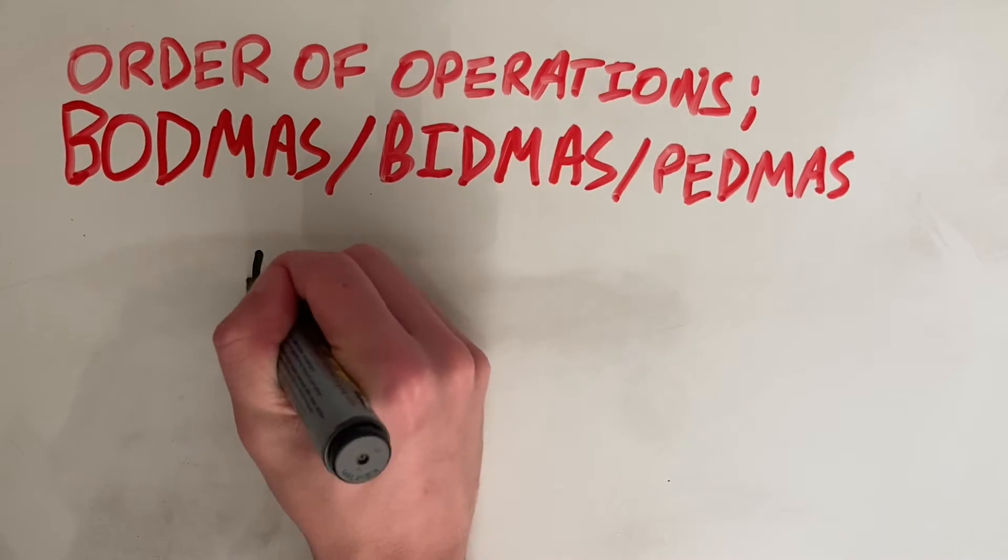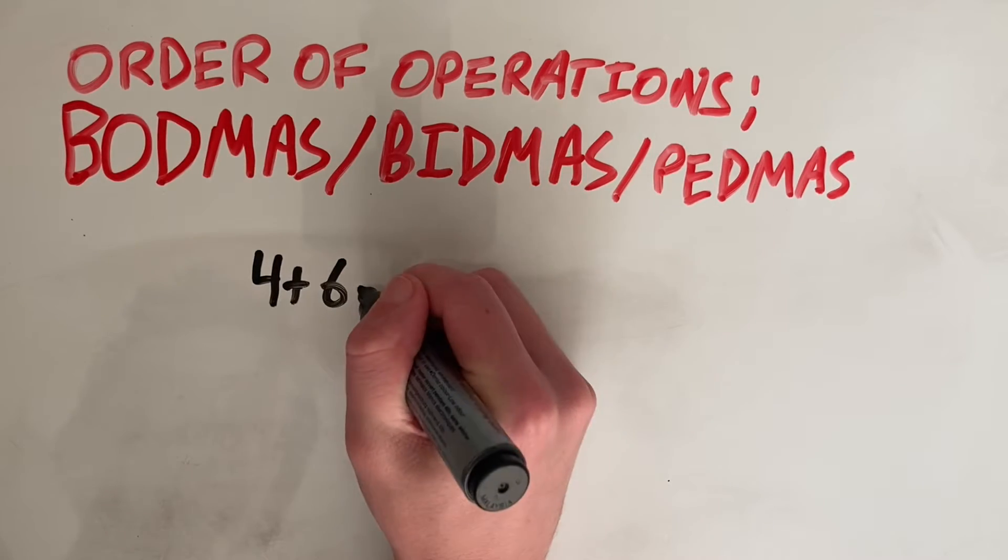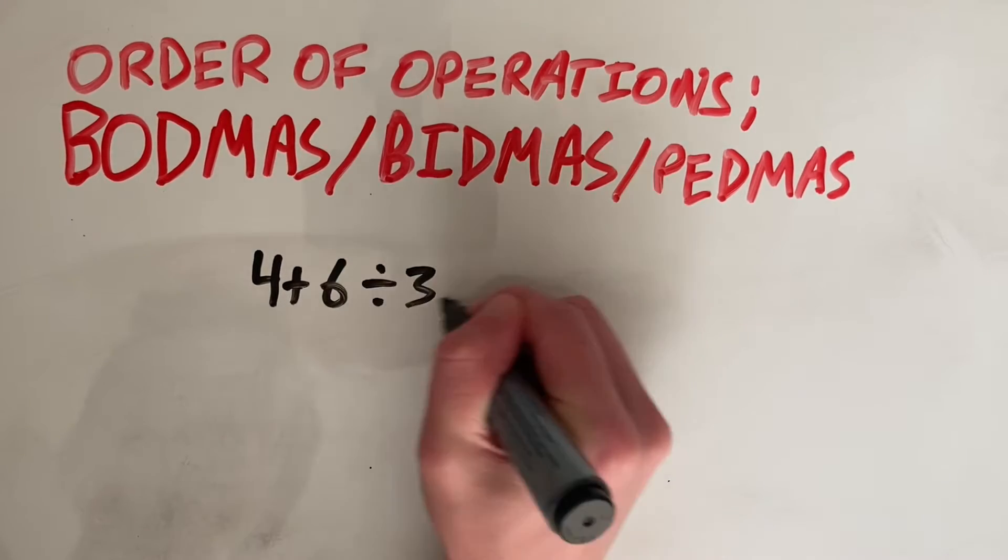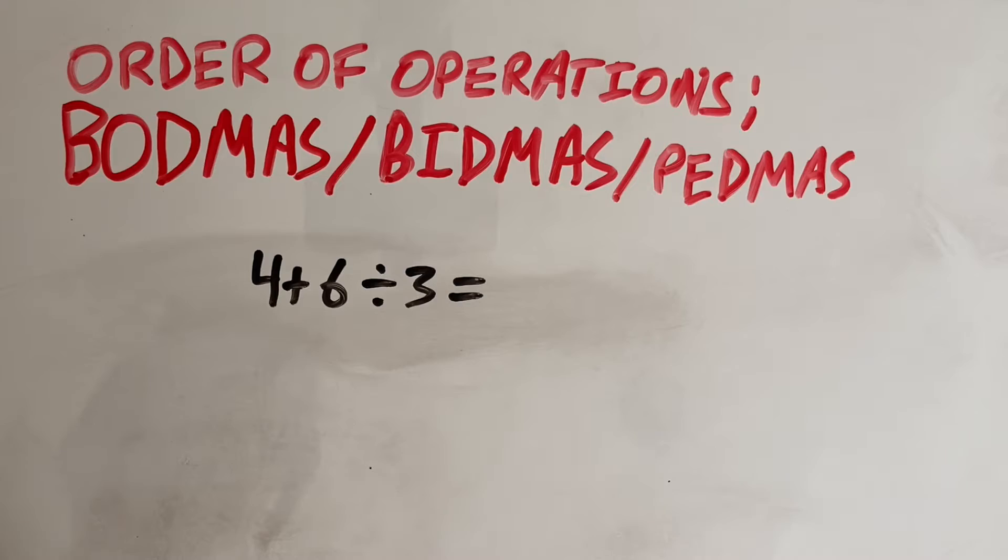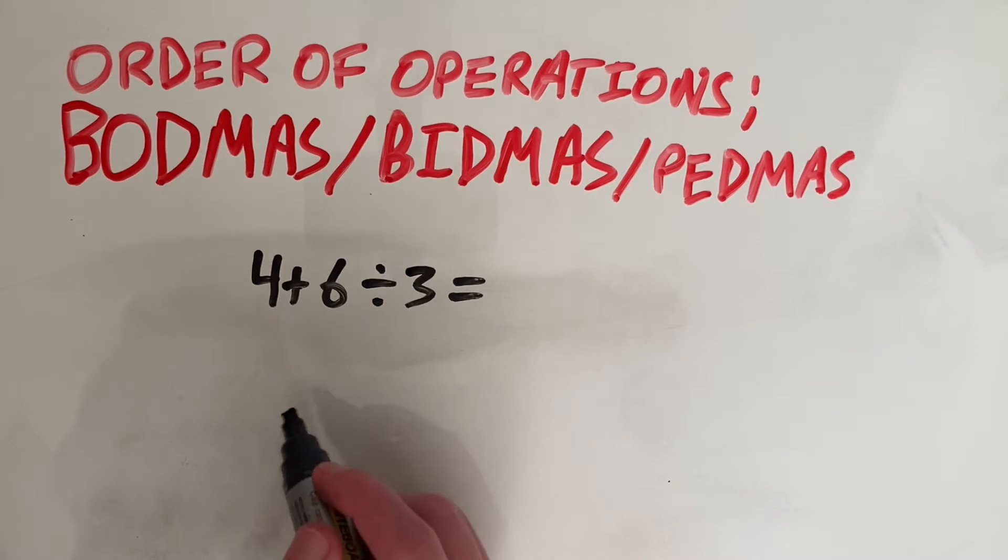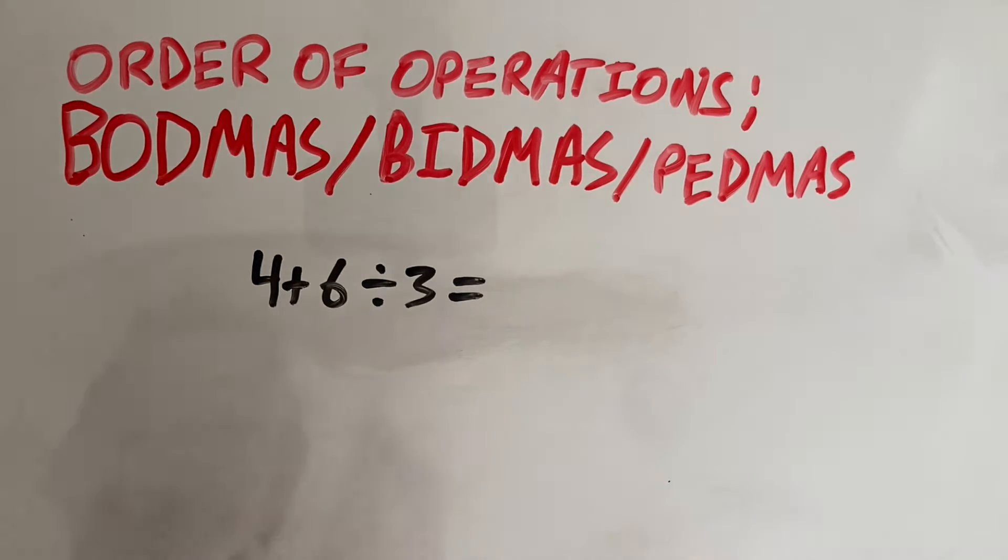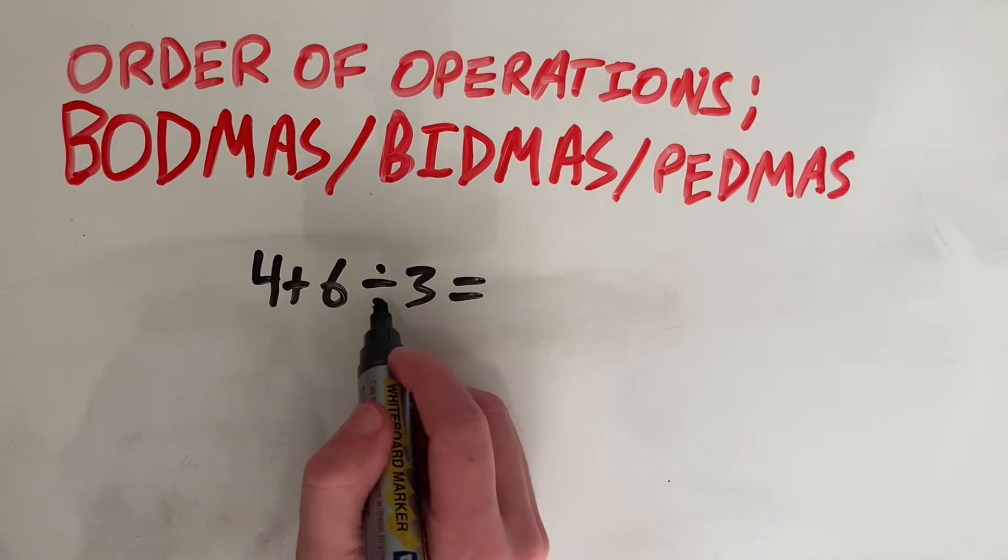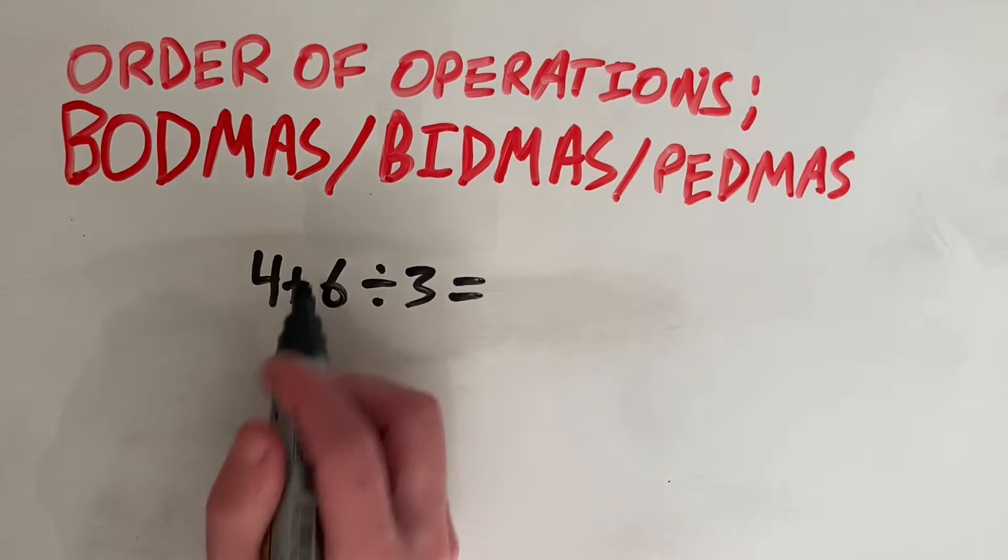If we had an equation that was just 4 plus 6 divided by 3, and we have to solve that, a lot of people that haven't yet done the order of operations would start with 4 plus 6, which is 10, and then try to divide that by 3. However,